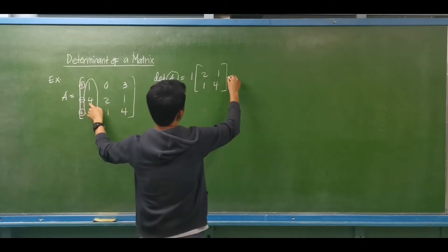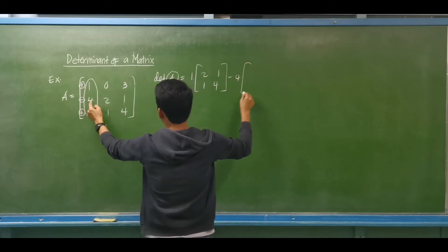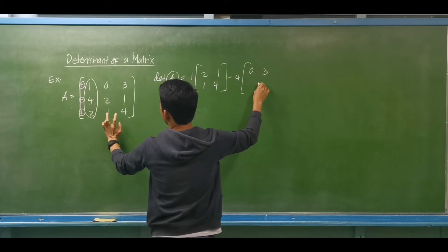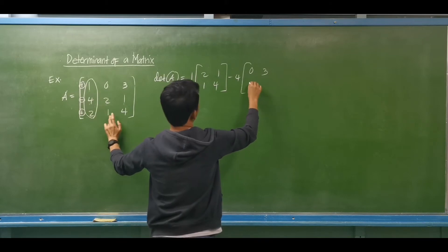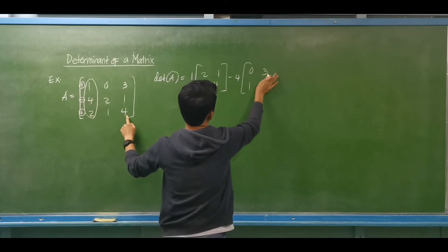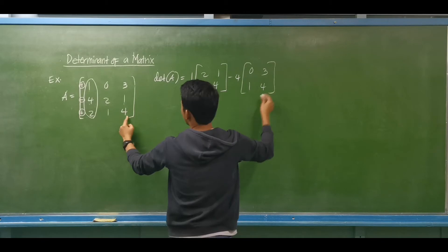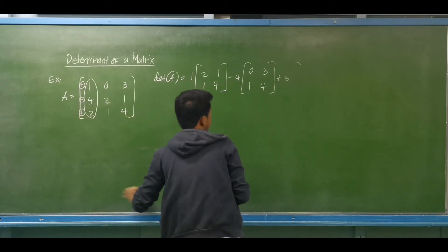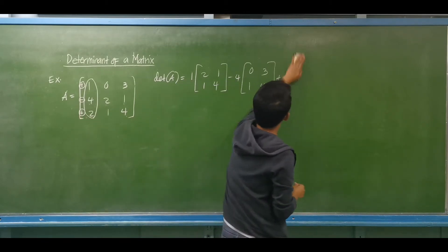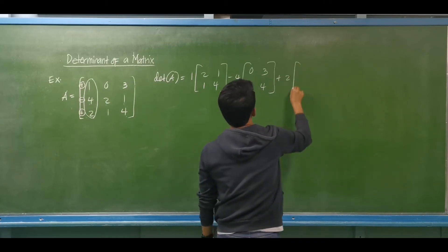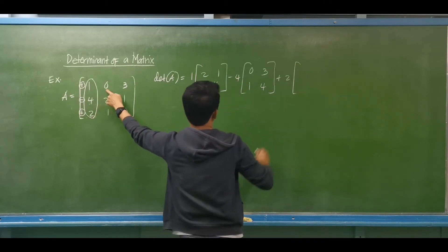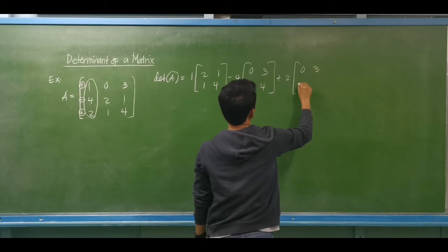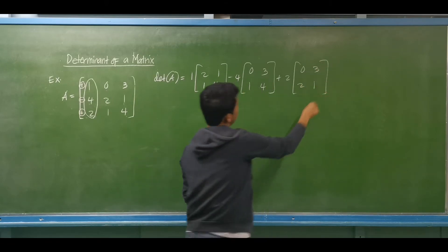Then minus 4. The minor of 4: we have 0, 3, then 1, 4. Then plus 2 — the minor of 2: we have 0, 3, then 2, 1. Then we simplify by finding the determinant of each 2 by 2 sub-matrix.